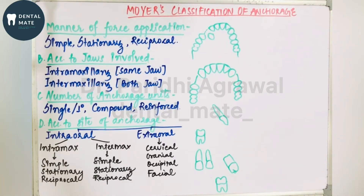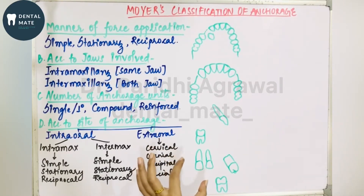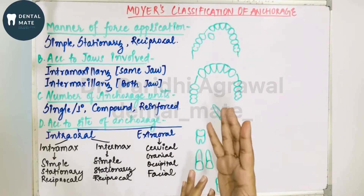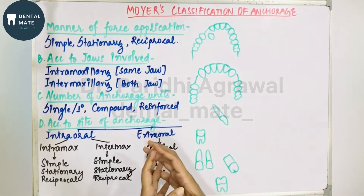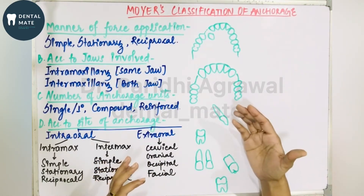Before starting, what we have read about anchorage is that anchorage is resistance to movement. By definition, Profit has defined anchorage as the resistance to unwanted tooth movement. So whatever unwanted tooth movement is there, that has to be resisted — that mechanism is known as anchorage. If any tooth is acting as an anchor unit, it does not mean that tooth is not moving, unless there is absolute anchorage.